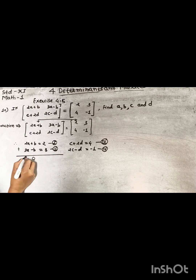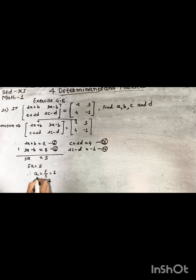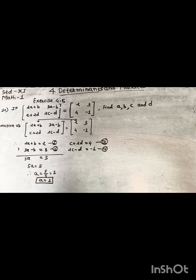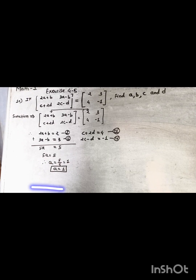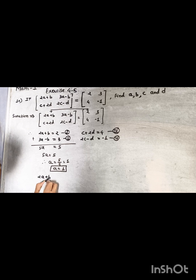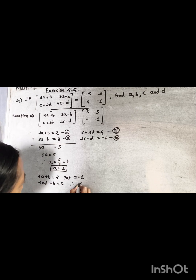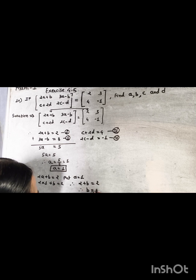Adding the first two equations: 2a plus 3a equals 5a, and 2 plus 3 equals 5, so 5a equals 5, therefore a equals 1. Now putting a equal to 1 into the equation 2a plus b equal to 2: 2 into 1 plus b equals 2, so 2 plus b equals 2, therefore b equals 0.